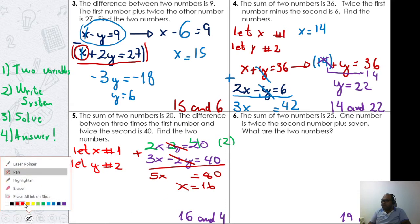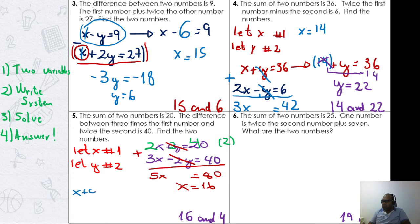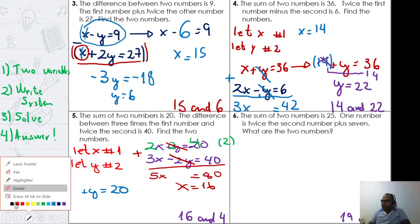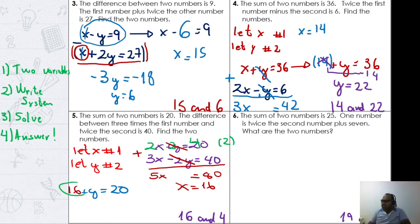For the second number, let's use the value we got: x equals 16 in the first equation. The first equation is x plus y equals 20. Instead of x, I'll write 16. So 16 plus y equals 20. Moving 16 by its opposite: y equals 4.